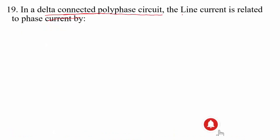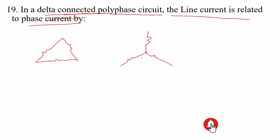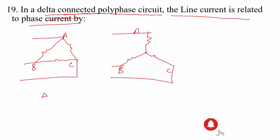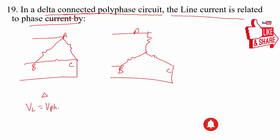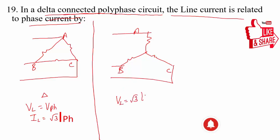Question 19: in a delta-connected polyphase circuit, the line current is related to phase current by what factor? Let us recall the relations for both networks. In a delta-connected network, line voltage equals phase voltage, but line current equals √3 times the phase current. In a star-connected network, line voltage equals √3 times phase voltage, and line current equals phase current.